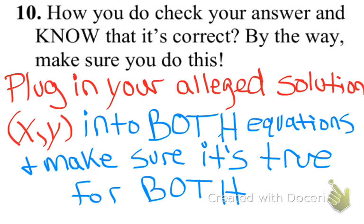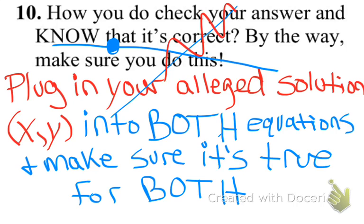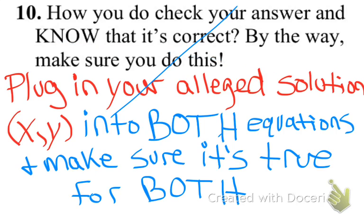It's important to make sure it's true for both equations. Just plugging in doesn't mean anything — it's got to be true for both. If it's only true for one line, that dot is on one line but not the other, so it's not the solution. The solution is where both lines cross, so it must be true for both.